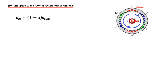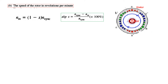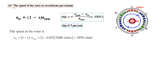Part b asks for the speed of the rotor in RPM. The rotor speed formula is derived from the slip formula: slip s equals (N-sync minus N-motor) divided by N-sync. Rearranging gives N-motor equals N-sync times (1 minus s). Substituting slip of 5% and synchronous speed of 3000 RPM, the rotor speed is 2850 RPM.